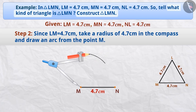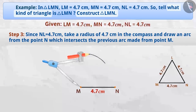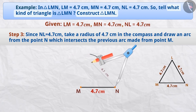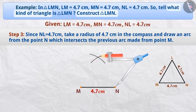We have to find the exact location of point L on the arc. Step 3: Point N is at a distance of 4.7 cm from point L. So, by taking a radius of 4.7 cm and taking point N as the center, we will draw another arc.